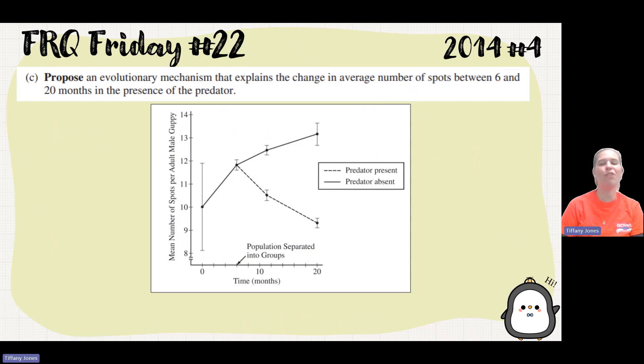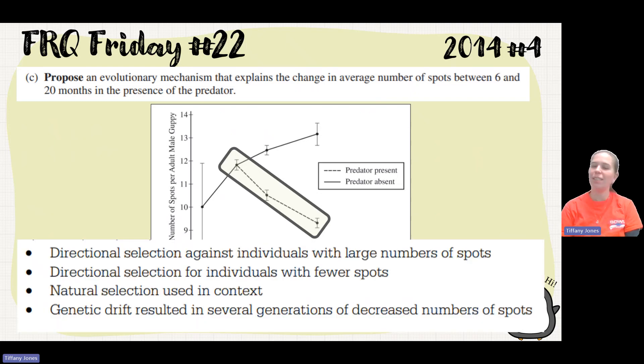So part C says propose an evolutionary mechanism that explains the change in average number of spots between six and 20 months in the presence of a predator. So again, if we look at our key, it tells us that the dotted line or the dashed line is our predator present. So we can see when the predator is present, our number of spots decreases. This screams directional selection to me. We're seeing you go from high spots to low spots, so it moves in a direction. And so we're going to have a directional selection against individuals with a large number of spots or a directional selection for individuals with fewer spots. You can also talk about natural selection.